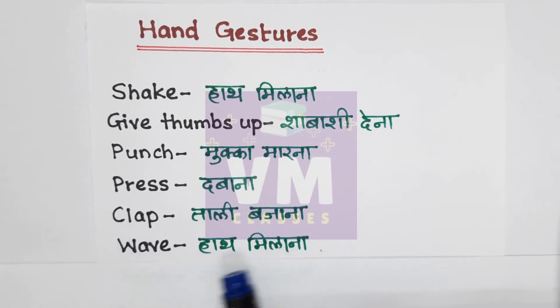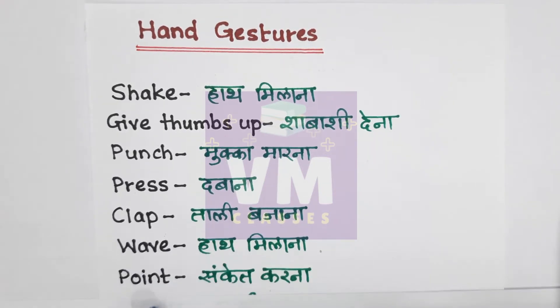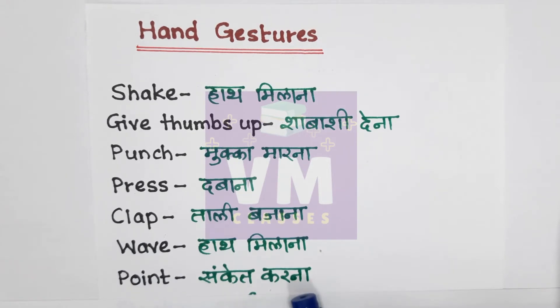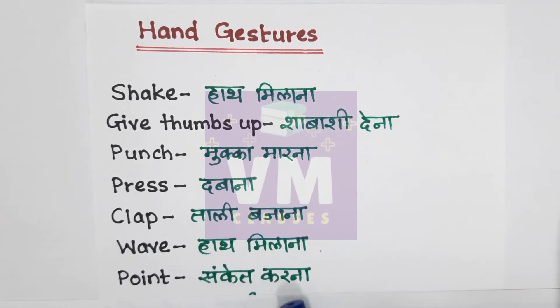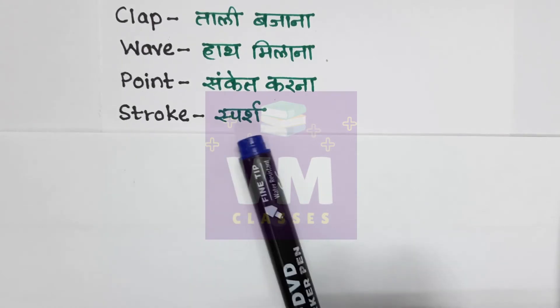Wave — heart milana. Point — sanket karna. Stroke — sparsh.